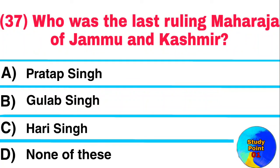Question: Who was the last ruling Maharaja of Jammu and Kashmir? Answer: Hari Singh.